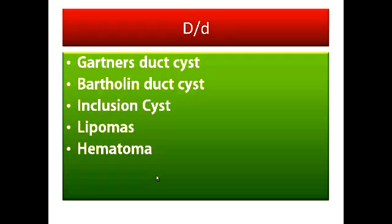The main discussion will be about what are the different features of each cyst, how we can differentiate one from the other — what features are peculiar to Gartner's duct cyst, Bartholin duct cyst, lipomas, hematomas, and inclusion cysts. The main thing is the location of the cyst that determines which cyst it is likely to be.